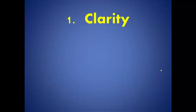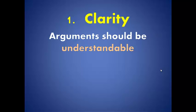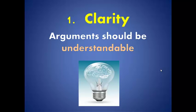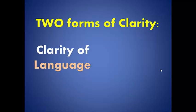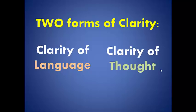The first standard is clarity. Clarity comes from the word 'clear.' When you argue, your argument should be understandable. Clarity is associated with a light bulb — when it is switched on, it brings light that makes the room clear. Same goes to clarity: it makes your argument clear. There are two forms of clarity: clarity of language and clarity of thought.